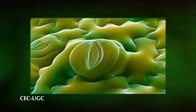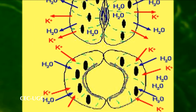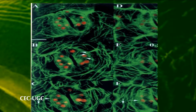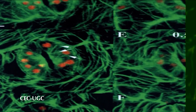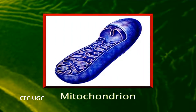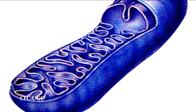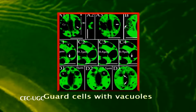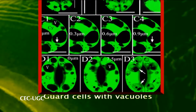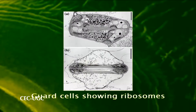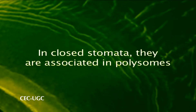During opening movements, the plasmalemma is convoluted and probably related to ion influx. Microtubules have been shown to be involved in wall building and probably in stomatal functioning. Guard cell mitochondrial membranes undergo configurational changes during stomatal movements, and those of open stomata have a larger vacuolar volume with one or few large vacuoles, whereas in closed stomata there are numerous small vacuoles. In some species, ribosomes are free in the cytoplasm of guard cells of open stomata, whereas in those of closed stomata they are associated in polysomes.